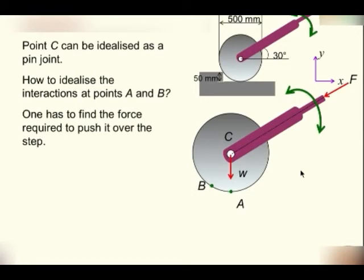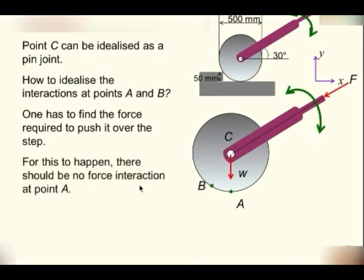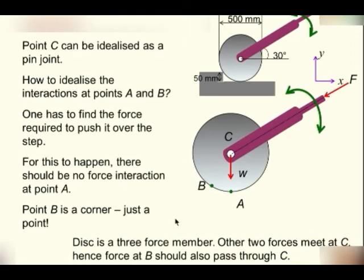We are not looking at a situation where it is lifted. When it is about to lift, it has to lose contact at A and that is the key aspect in this problem. There should be no force interaction at point A. Point B is a corner, it is just a point, fine. You can recognize solving this problem in many different ways. I have shown you the weight W acting through the centroid. And the man is pushing this roller and this is the force. They meet at this point. The third force has to pass through this point because it is a three-force member. This is one way of looking at it.